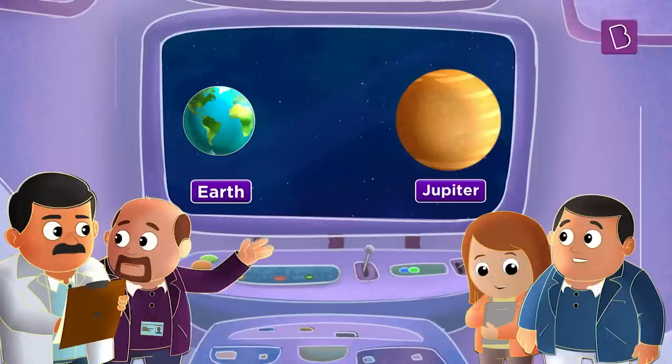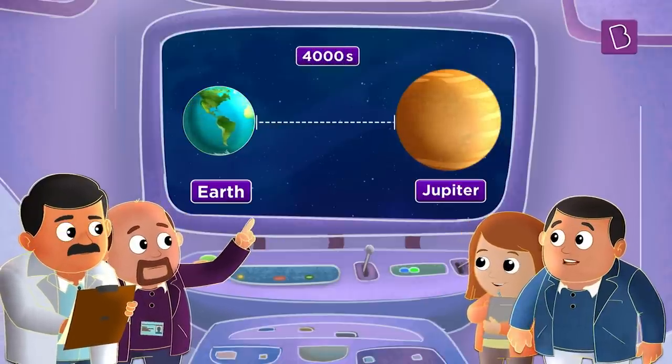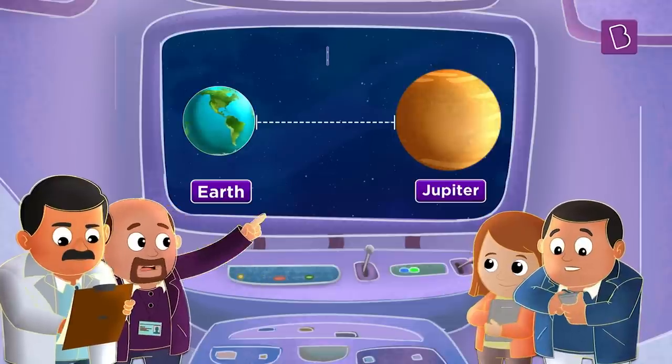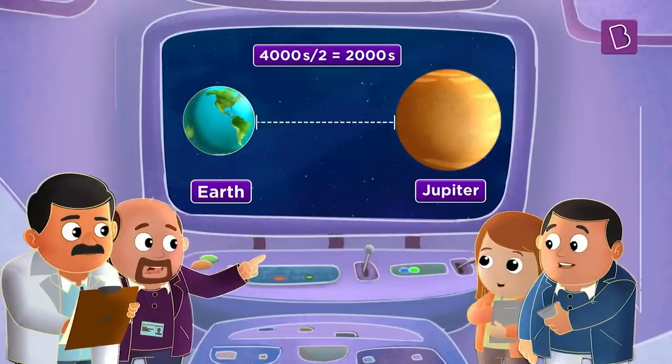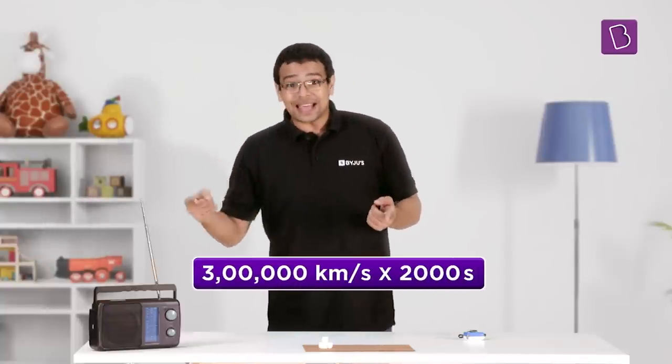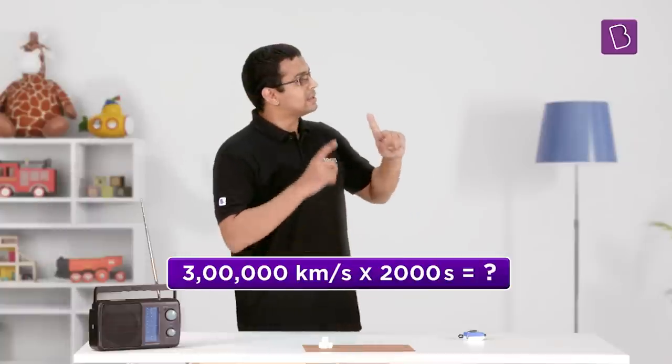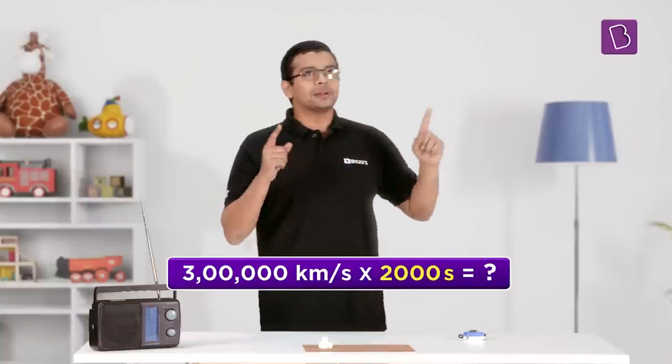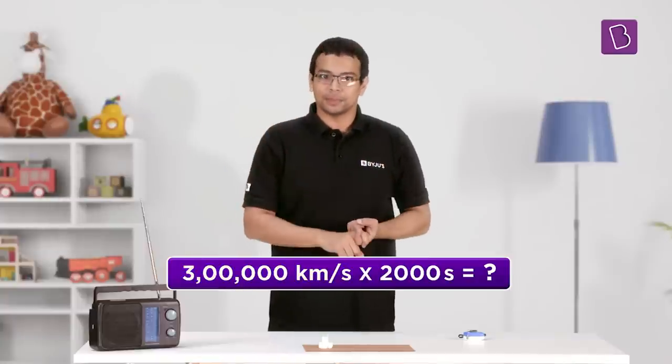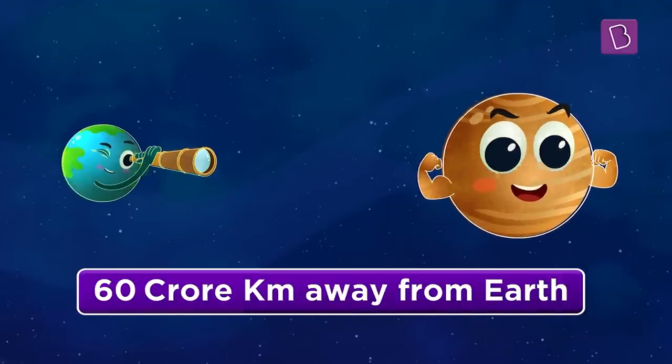When scientists actually tried this for the first time, right, this experiment, they measured that the time was approximately 4,000 seconds. This means that it approximately took 2,000 seconds for a one-way trip. Radio waves traveled 3 lakh kilometers in one second. So in 2,000 seconds, they would have traveled—that's 2,000 seconds times 3 lakh kilometers per second. That is 60 crore kilometers. Wow! Jupiter is actually 60 crore kilometers away from Earth.